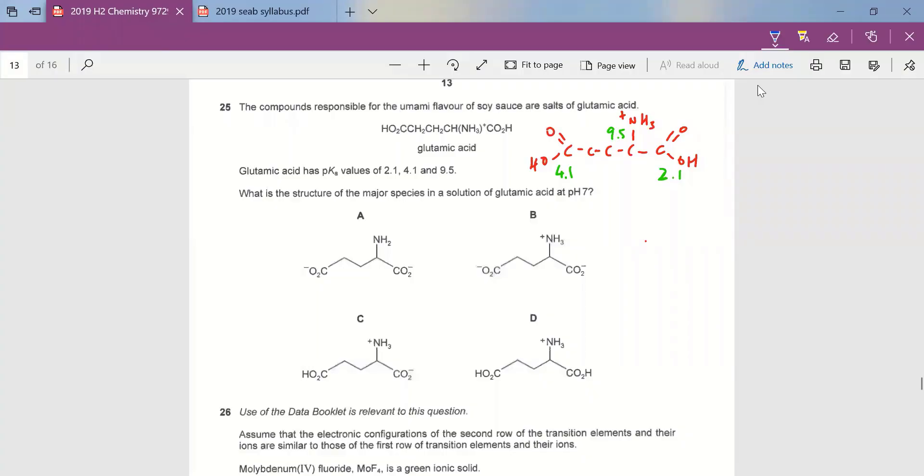All right, for question 25, they say that the glutamic acid with the structure as shown has pKa values of 2.1, 4.1, and 9.5. So what is the structure of the major species in the solution of glutamic acid at pH 7?